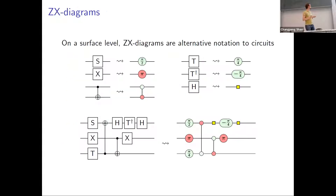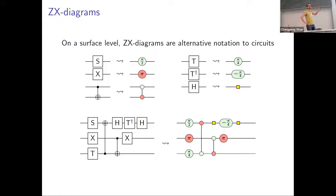Let me explain these steps in detail. ZX diagrams are, to a first approximation, just an alternative notation for circuit notation. You can see gates written in ZX notation: Z phase gates like S, T, T† correspond to green dots called Z spiders with a phase. The S gate is a π/2 rotation so we write π/2; the T gate is π/4. The X gate uses a different color — red. The CNOT gate is two things attached together. The Hadamard has a special yellow box as syntactic sugar. To convert a circuit to a ZX diagram, we do this gate-by-gate.